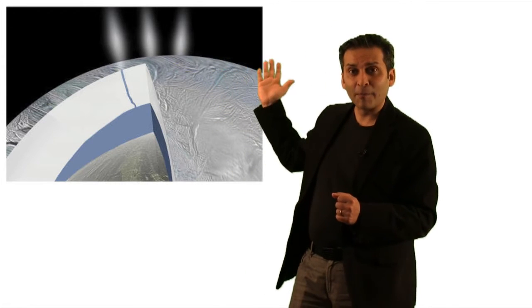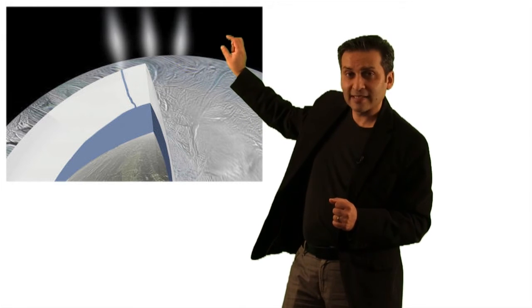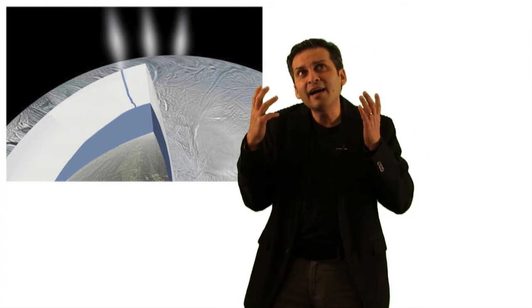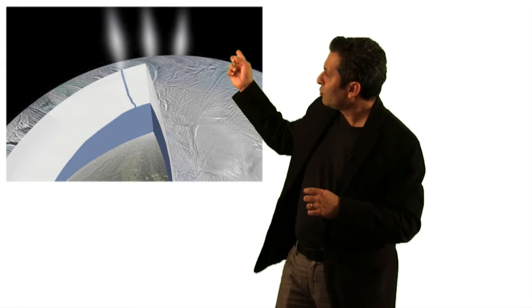This is a cutaway showing the structure: the rocky core at the center, then the subsurface ocean of Enceladus, and you see ice on top. Now there is a question: if it's so far from the Sun, why is there liquid water on Enceladus? The idea is that Saturn's tidal forces warm its interior through gravity, heating the moon and keeping water liquid beneath the surface.